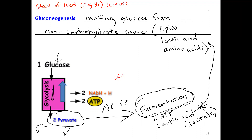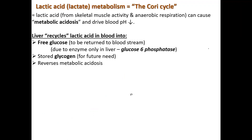Your skeletal muscles produce lactic acid all the time depending on how heavy your exercise is, so you have to be able to get that lactic acid out of the bloodstream. Lactic acid from skeletal muscle activity through anaerobic respiration can cause what's known as metabolic acidosis. The liver recycles lactic acid using the Cori Cycle. The liver takes that lactic acid, metabolizes it, and recycles it into glucose — that's gluconeogenesis.